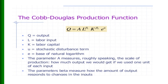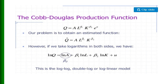The problem is to obtain an estimated function Q̂ = A × L^β̂₁ × K^β̂₂. If we take the natural log on both sides of this equation, we get: ln(Q) = ln(A) + β₁ ln(L) + β₂ ln(K) + u. This production function is known as the double-log, log-log, or constant elasticity production function, also called the log-linear model.